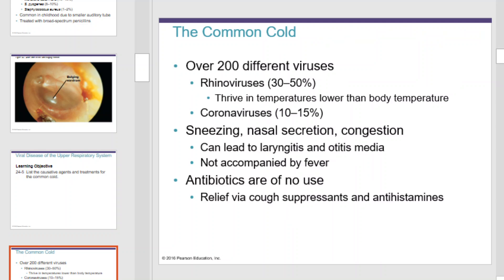Viral diseases of the upper respiratory system: the common cold caused by rhinovirus occurs in over 200 different forms. Rhinoviruses account for 30-50% of what most people consider a cold and thrive in temperatures lower than body temperature. Coronaviruses account for 10-15% of common colds. Symptoms include sneezing, nasal secretion, and congestion. It can lead to laryngitis and otitis media, is not normally accompanied by a fever, and antibiotics are of no use.